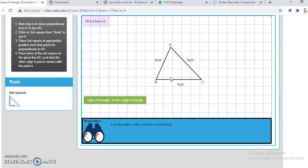Now what we have to use is this set square. We will use this set square and we have to put it here, and we will have to draw a perpendicular from A to BC.